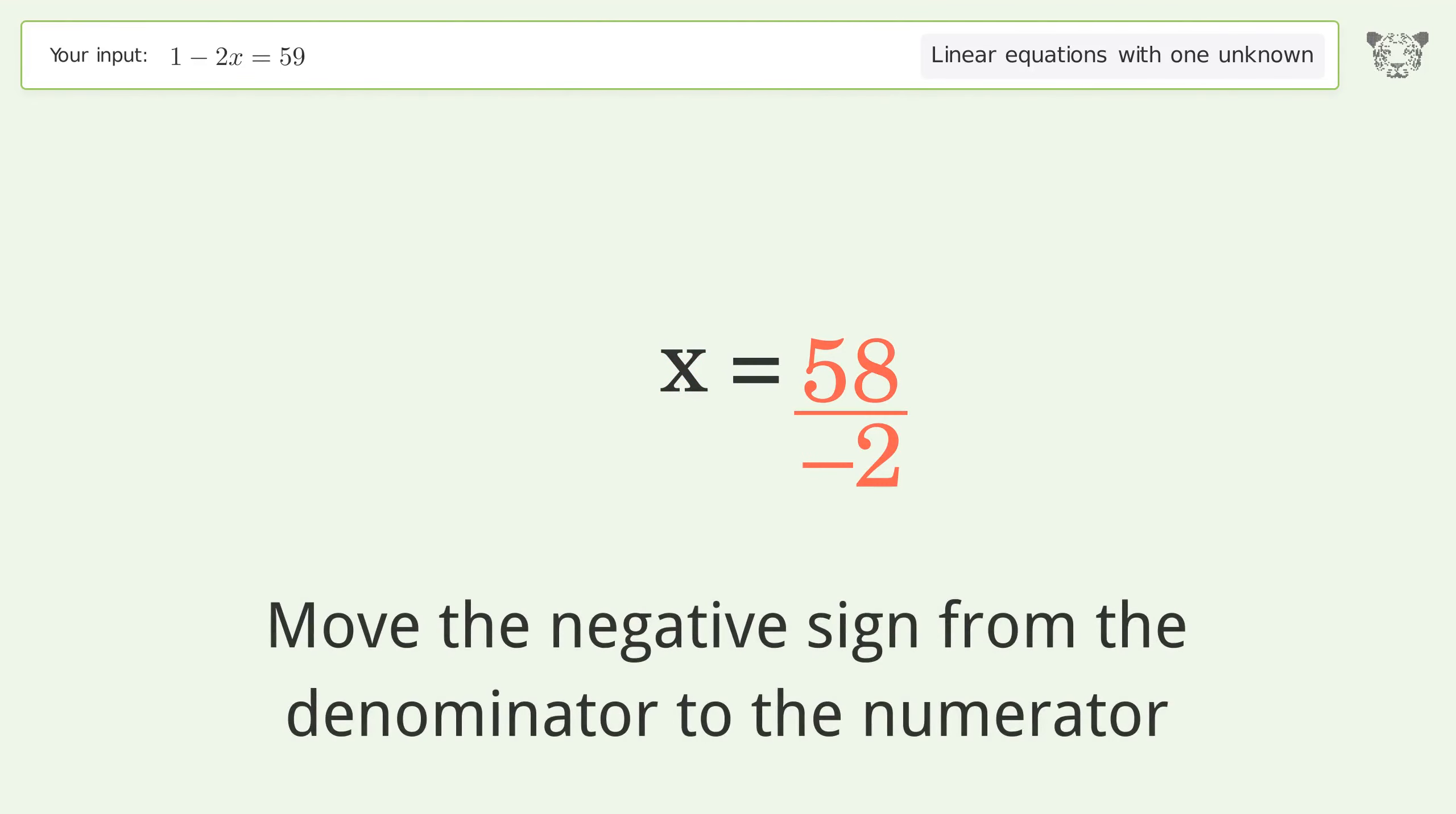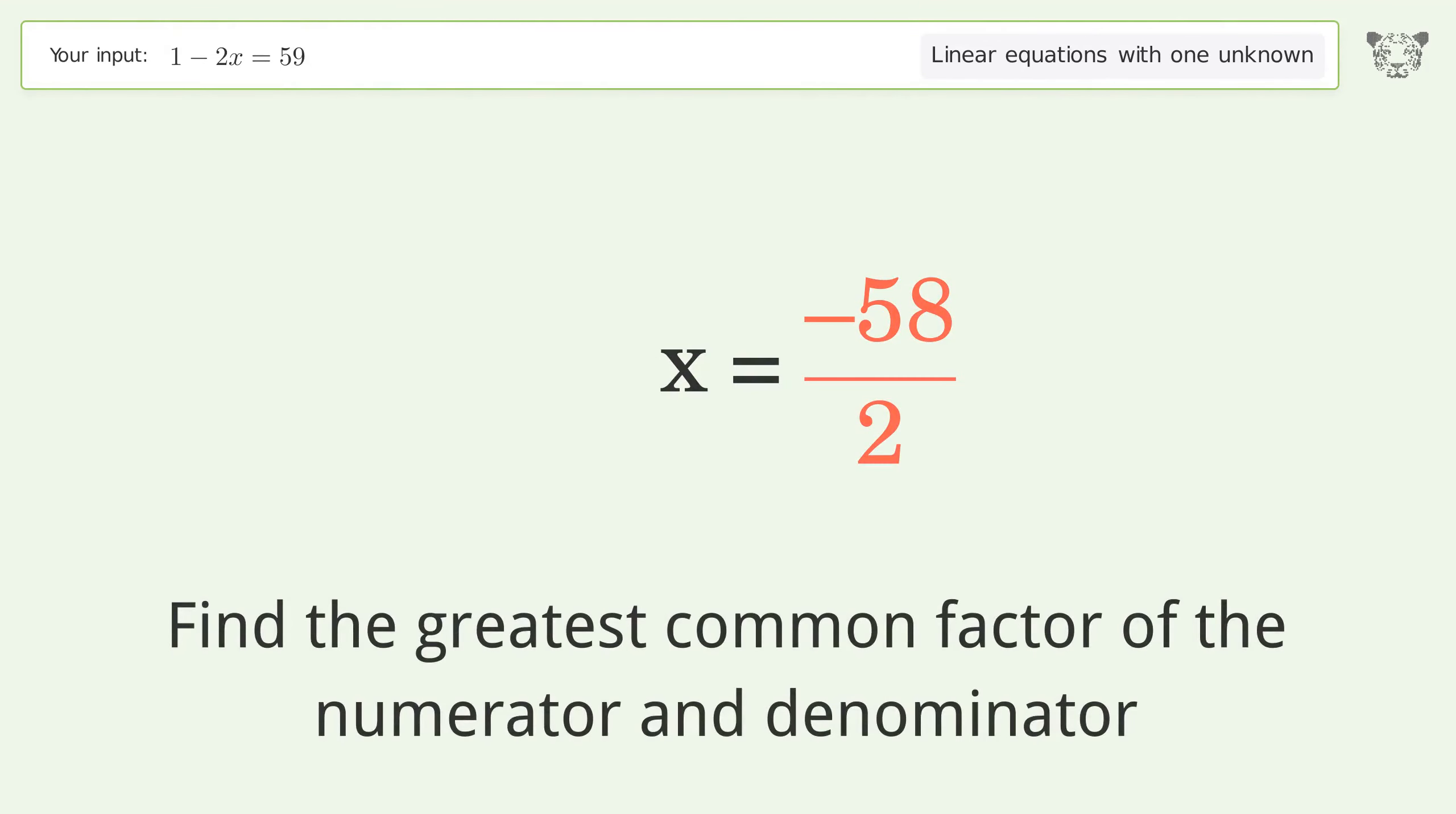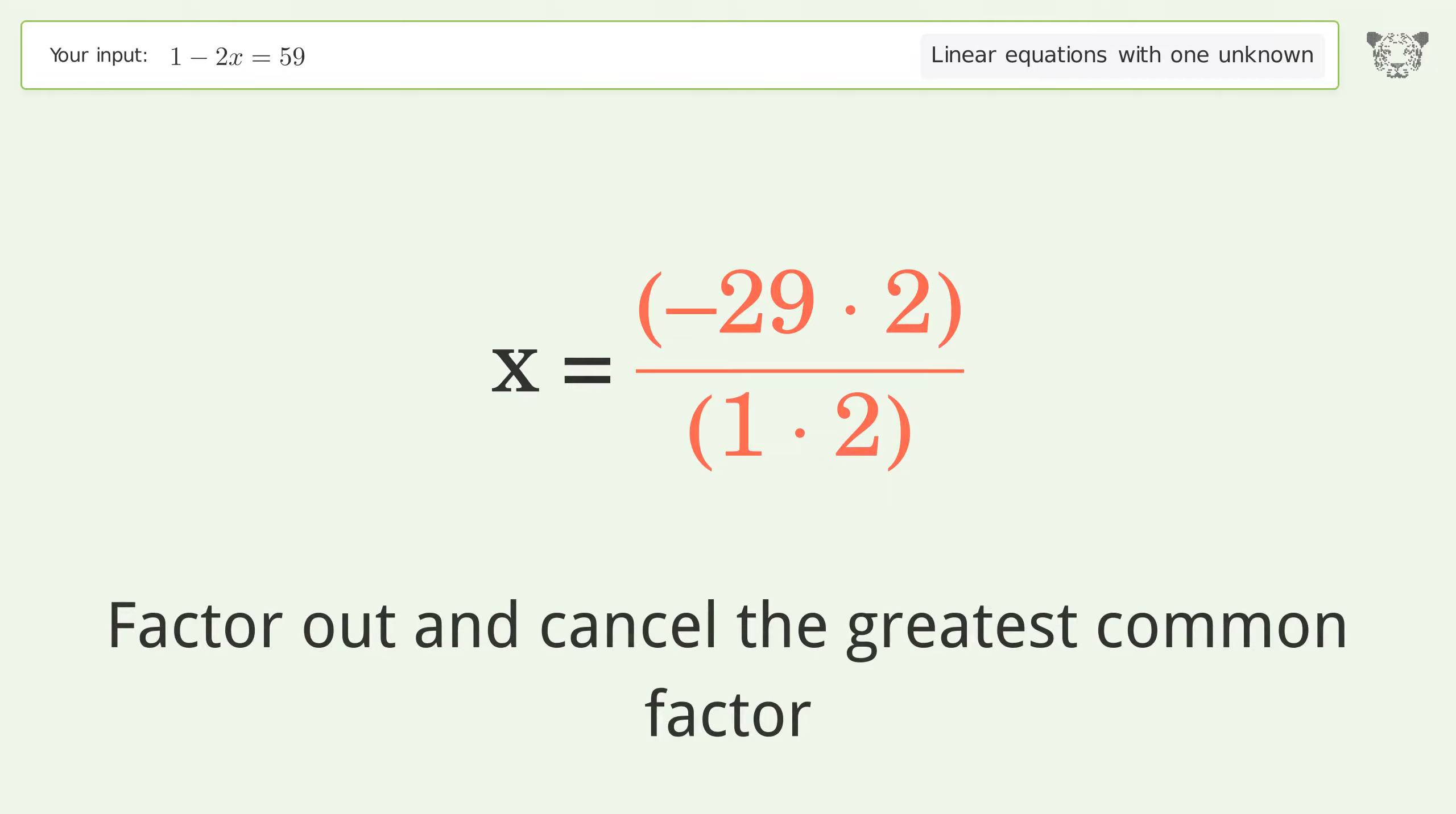Move the negative sign from the denominator to the numerator. Find the greatest common factor of the numerator and denominator. Factor out and cancel the greatest common factor.